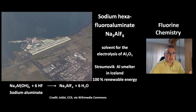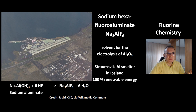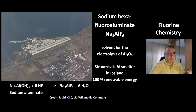Sodium hexafluoroaluminate is used as a solvent for the electrolysis of aluminium oxide in the production of aluminium. This is a picture of the Straumsvík aluminium smelter in Iceland. Aluminium production needs a lot of energy, and this factory is well placed because Iceland already runs on 100% renewable energy. Sodium hexafluoroaluminate can be made from sodium aluminate by adding hydrogen fluoride, with water as a byproduct.